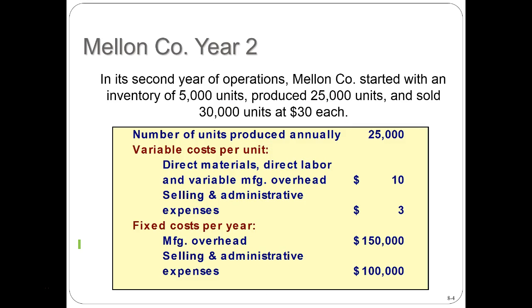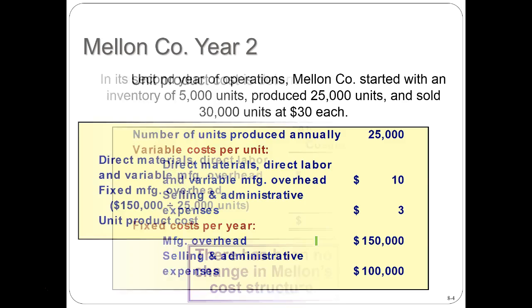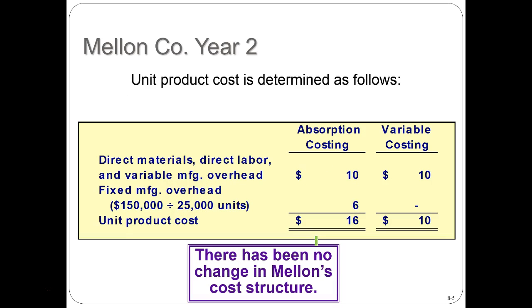In the second year of operations, Mellon Company started with an inventory of 5,000 units, produced 25,000 units, and sold 30,000 units at $30. The data: units produced annually 25,000. Variable cost per unit includes direct material, direct labor, and variable overhead — all things that change with production — adding up to $10 per unit. Selling and administrative variable costs are $3 per unit. On the fixed cost portion, manufacturing overhead is $150,000 and selling and admin is $100,000.